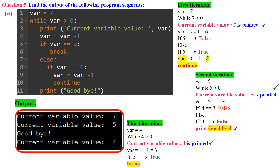Question 5, subdivision 6: var is initialized to 7. The while loop continues as long as var > 0. Inside the loop, var (7) is printed, then var is decremented by 1 to become 6. An if statement checks if var == 3 — it's not. In the else block, another if checks if var == 6 — it is, so var is decremented by 1 to become 5, and the continue statement skips the rest of the loop body, moving to the next iteration.